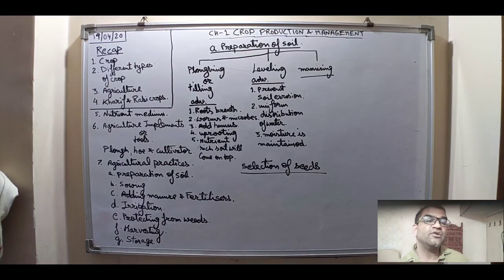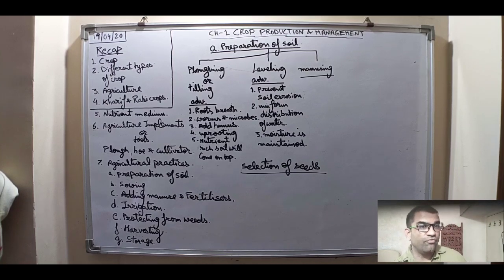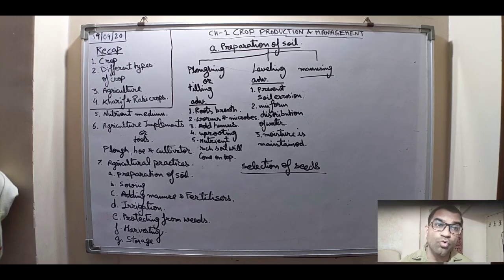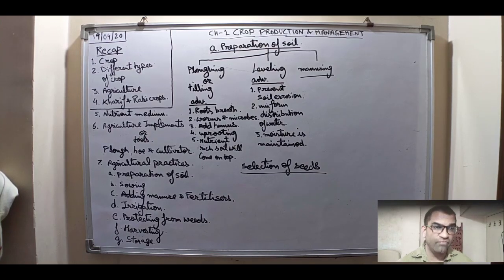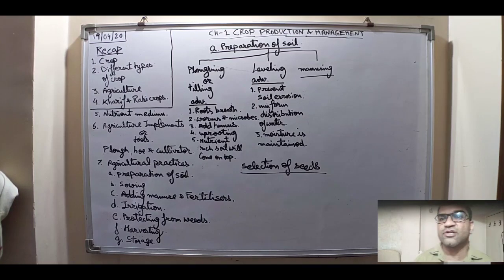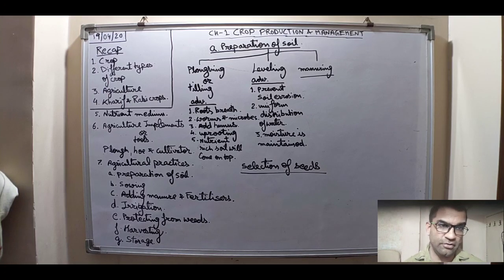Why are tools required? Just like Indian soldiers cannot win a war without weapons, farmers also need agriculture tools to grow crops. Without tools, farmers cannot carry out the several practices needed in the field. The basic tools required by a farmer are the plow, hoe, and cultivator.